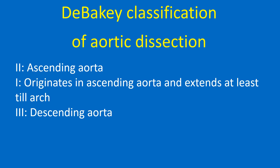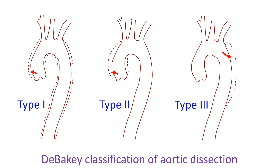A diagrammatic representation shows DeBakey classification of aortic dissection into types 1, 2, and 3, with type 3 involving the descending aorta.